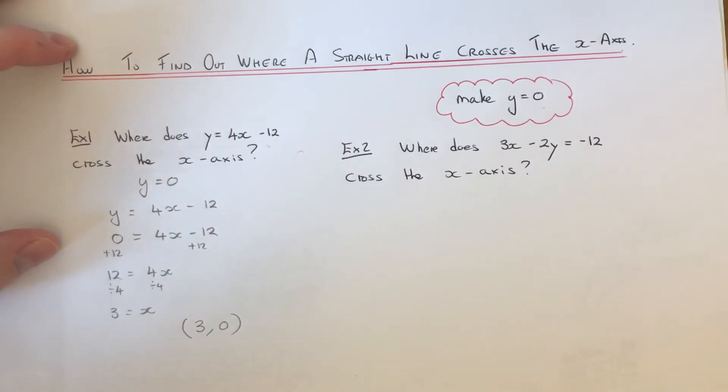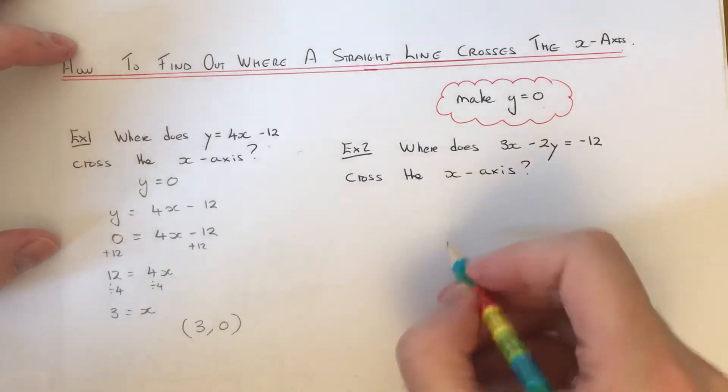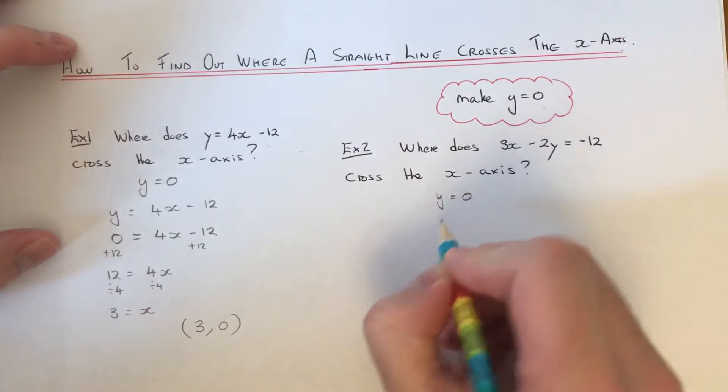Let's move on to the second example. Where does the line 3x minus 2y equals minus 12 cross the x-axis? Again, we just need to make y equals 0.